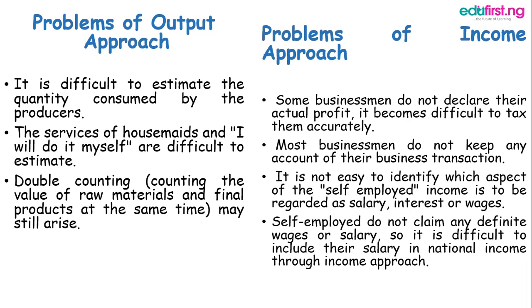Problems of the income approach: some businessmen do not declare their actual profit, making it difficult to tax them accurately. Most businessmen do not keep any account of their business transactions. It is not easy to identify which aspect of self-employed income is to be regarded as salary, interest, or wages. Self-employed individuals do not claim any definite wages or salary, so it is difficult to calculate their income through the income approach.